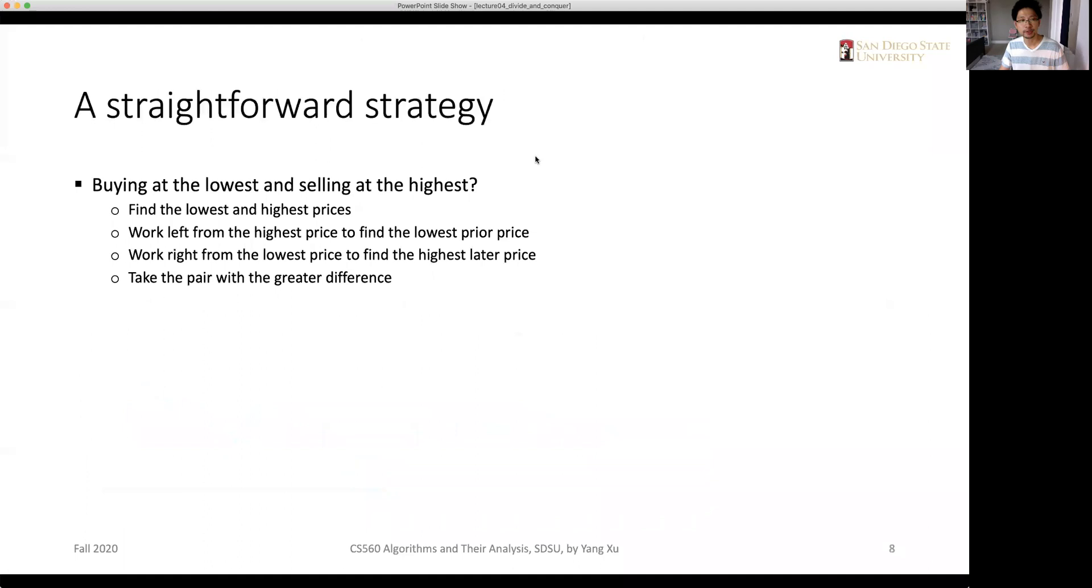So we can think about the straightforward strategy. What about buying at the lowest and selling at the highest possible date? So basically given the data like this, there are two ways to do according to this strategy. We find the highest prices because the highest price is the day that we want to sell it. So we will need to work left from the highest price to find the lowest prior price, because the buying must happen before the sale.